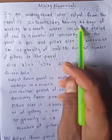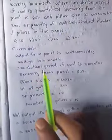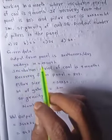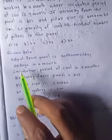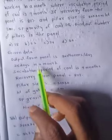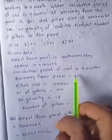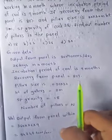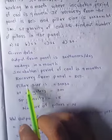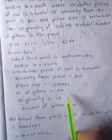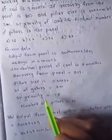There are 26 working days per month. First, write down the given data. Output from panel is 360 tons per day, 26 working days in a month, incubation period of coal is nine months, recovery from the panel is 80%, pillar size is 30 by 30 meters, height of galleries is 3 meters, and specific gravity of coal is 1.8. We have to find out the number of pillars.